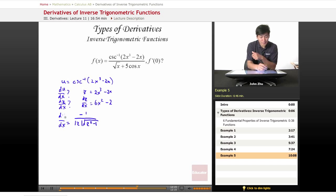our dz dx is this term, and we replace this by negative 1 over the absolute value of z is 2x cubed minus 2x times the square root of z squared. 2x cubed minus 2x squared minus 2x squared minus 1.